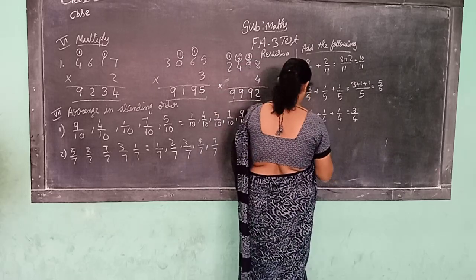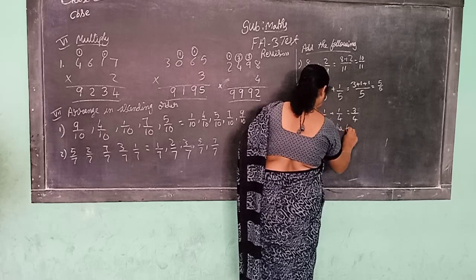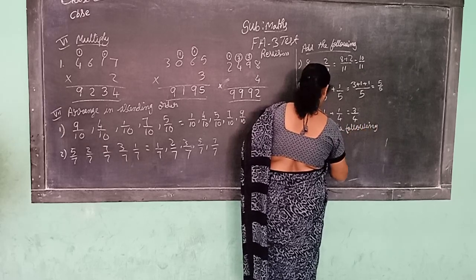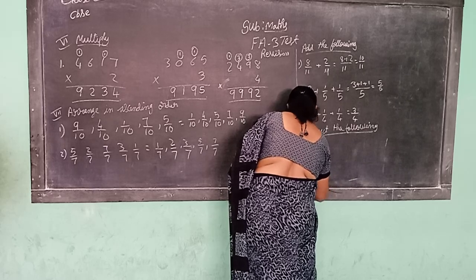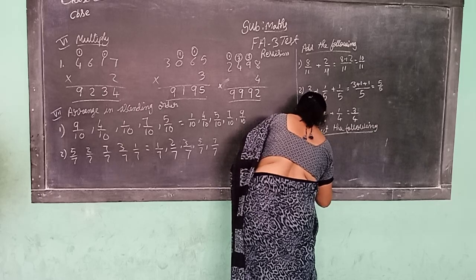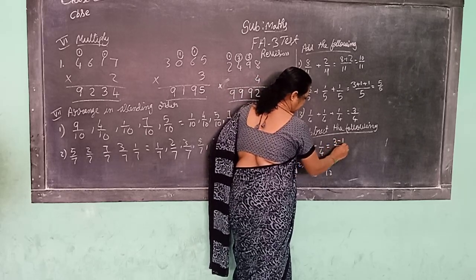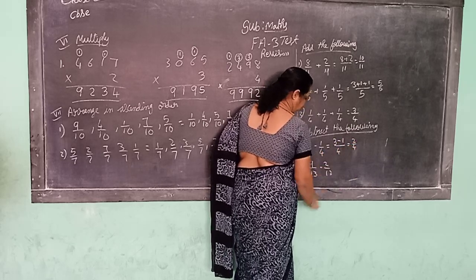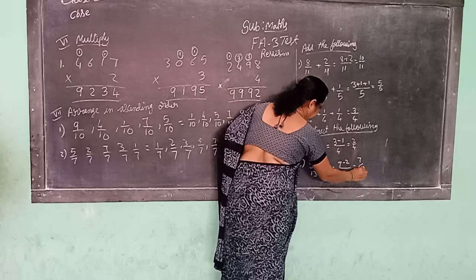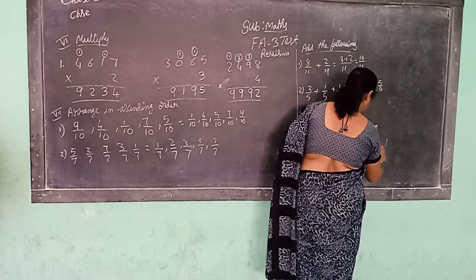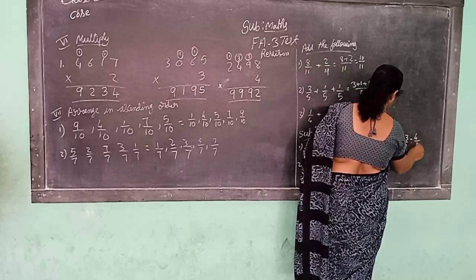So try again — you just write the numerator. 3 minus 1 by 4 is equal to 3 minus 1, which is 2 by 4. Here: 9 by 13, 9 minus 2 by 13 is equal to 7 by 13. First sum: 7 minus 3 by 8 is equal to 7 minus 3, which is 4 by 8.